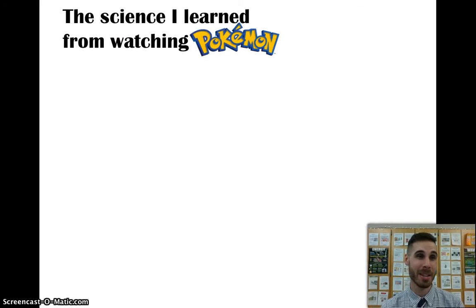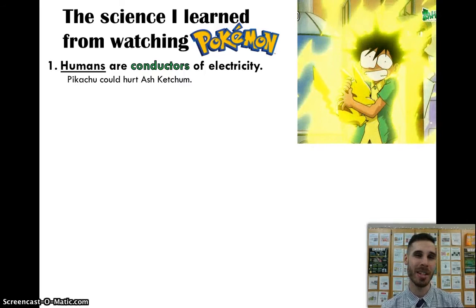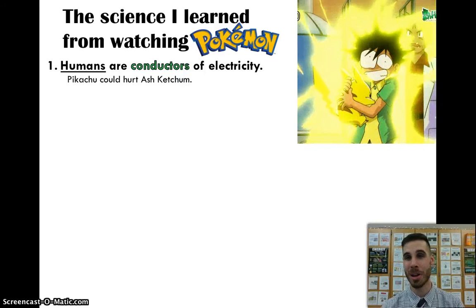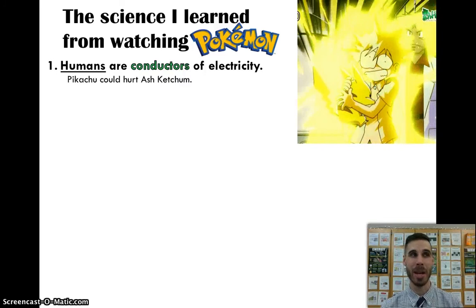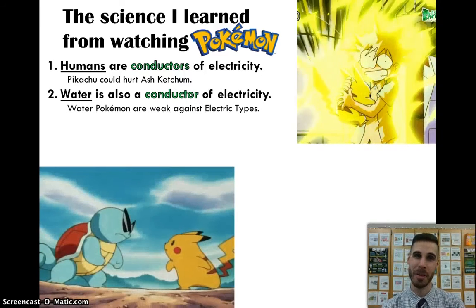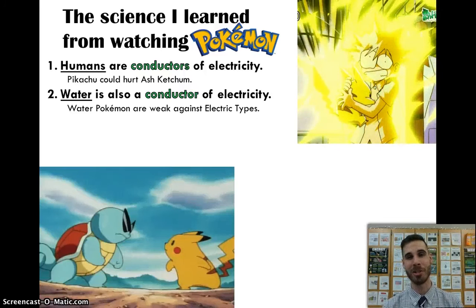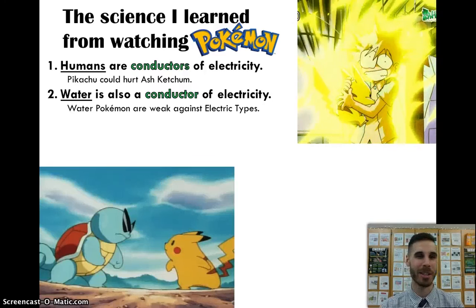Here are some fun notes before we end. When I was a child, I watched a show called Pokemon, which I believe is still on as of 2016. The science I learned from watching Pokemon: number one, I learned as a child before I ever took a physics class that humans are conductors of electricity. I learned this because in the show, Pikachu could hurt Ash Ketchum by electrifying him — so humans are susceptible to electricity. I also learned that water is a conductor of electricity. As discussed, pure H2O may not be, but you never really find pure H2O sitting around. It's always got stuff in it, and that makes it a good conductor. Water Pokemon like Squirtle were weak against electric types, and that was confirmed in the Game Boy Pokemon game.